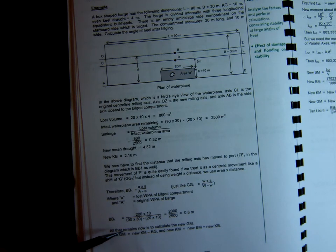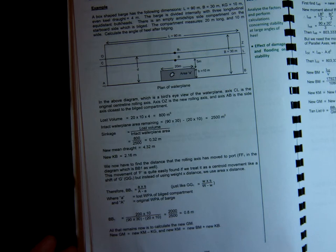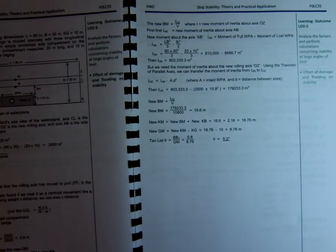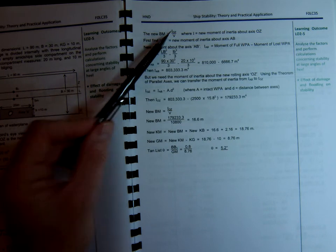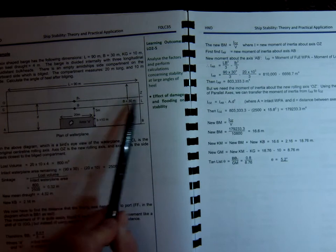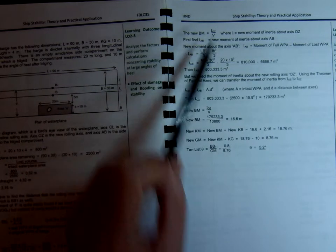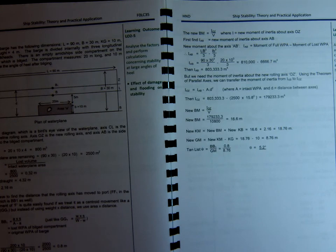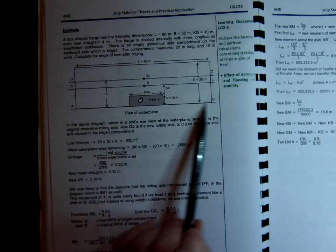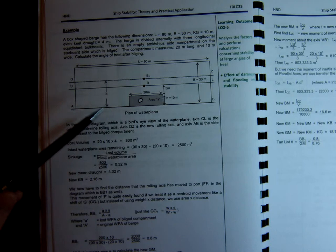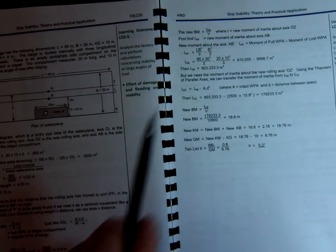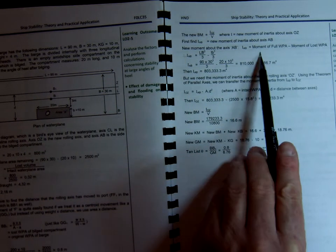So now we need to get the new GM, because that 0.8 is used on the formula, tan theta, BB1 over GM. So let's get the new GM. Well, we've already got the KB, so we need the new BM. And this is where inertia, or second moment of area, comes in. The formula for the new BM is the moment of inertia about the axis OZ over V, which is the volume. So first of all, we have to find this moment of inertia here about AB. It's important that we find that first, and then we can work back to find it on OZ.